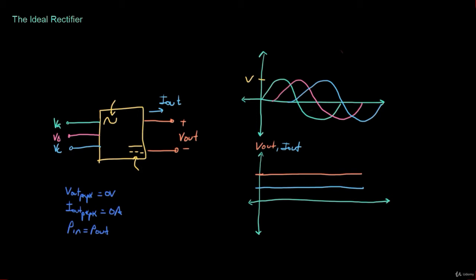Now that we've looked at what an ideal rectifier is, let's take a look at what goes inside the black box. We'll examine the different types of circuits that can be used to make a single-phase rectifier or a three-phase rectifier, and we're going to see how they compare to each other. There are many different types of rectifiers and we'll analyze a few of them.